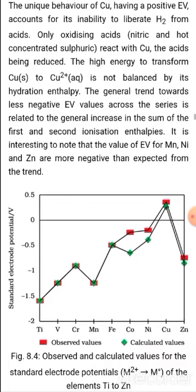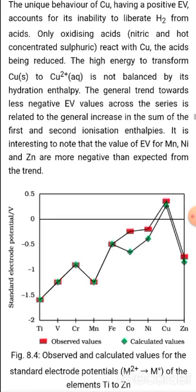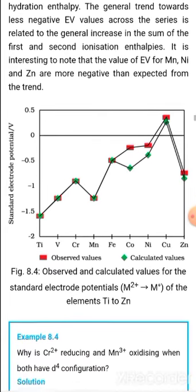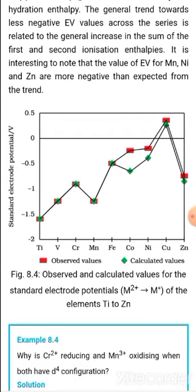Copper's positive electrode potential places it in the category of oxidizing agents. Only oxidizing acids with higher electrode potential values than copper — such as nitric acid and hot concentrated sulfuric acid — react with copper. The reason copper's electrode potential is positive is that it has low hydration enthalpy but very high atomization enthalpy. The high atomization enthalpy makes the overall electrode potential value positive.